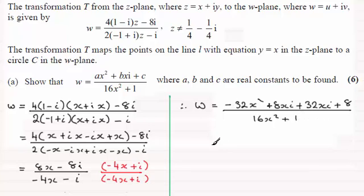So grouping the top up we get minus 32x squared. And then we've got 40xi. And then the plus 8. And then all of this is divided by the 16x squared plus 1.